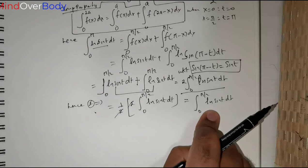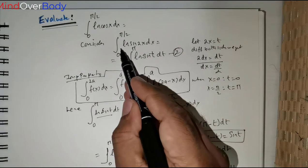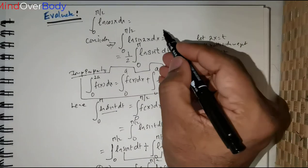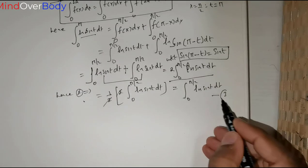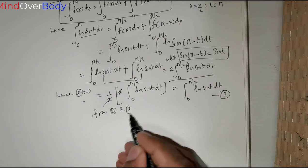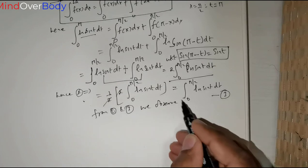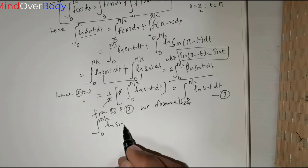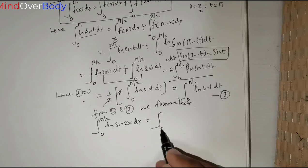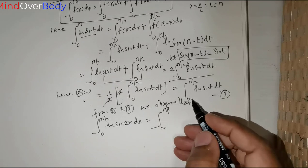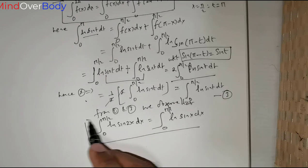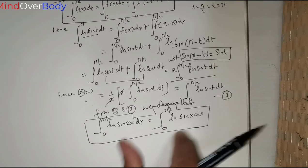This is a very important result. I started with ∫₀^(π/2) ln(sin 2x) dx and reached ∫₀^(π/2) ln(sin t) dt. From results (1) and (3), we observe that ∫₀^(π/2) ln(sin 2x) dx = ∫₀^(π/2) ln(sin t) dt, which by the property of integrals (variable renaming) equals ∫₀^(π/2) ln(sin x) dx.